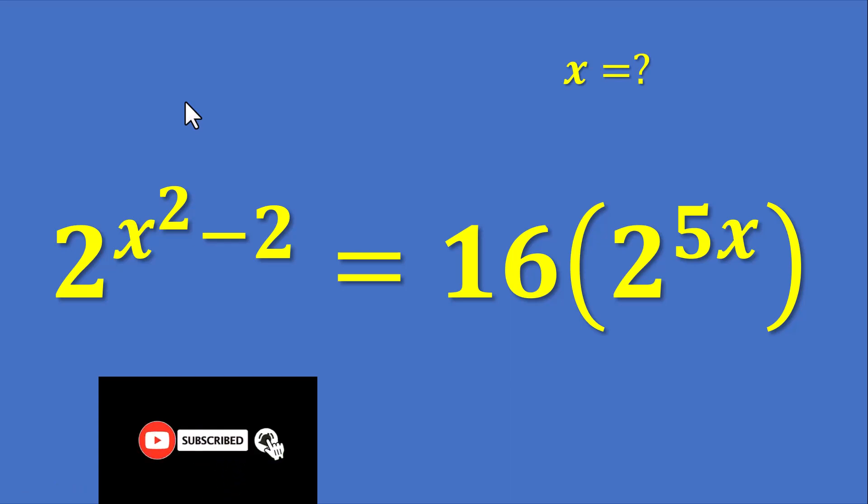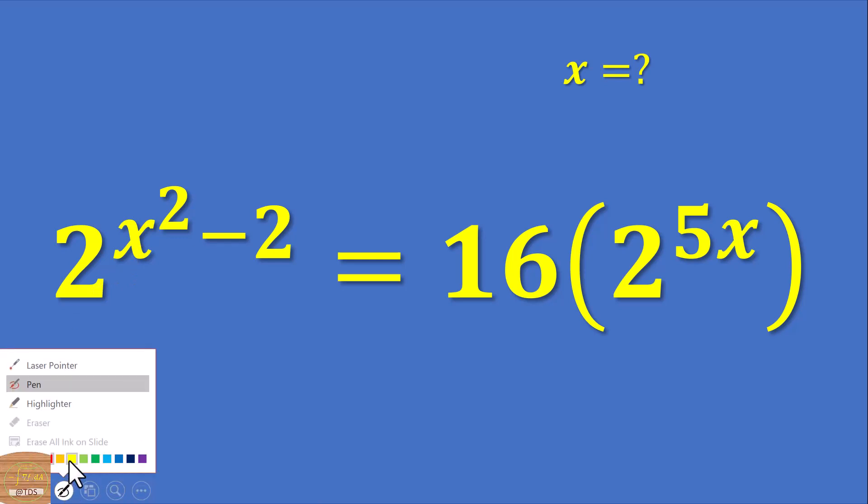All right, so consider this exponential equation. We have 2 to the power of x squared minus 2 equals 16 times 2 raised to 5x. So we have this one in the bracket.